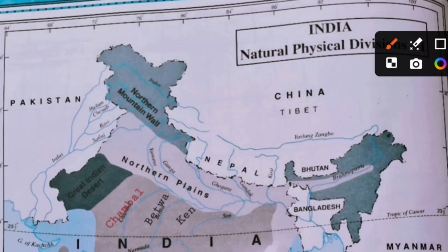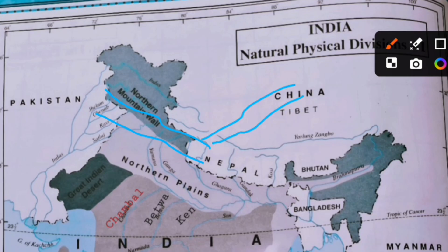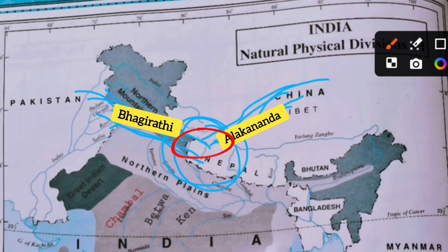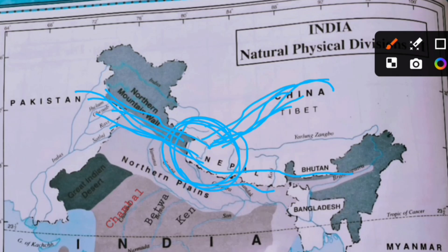The Ganga river is not originated directly as Ganga — it was formed by the confluence of two small rivers. Confluence means the meeting point of rivers. The two rivers are Bhagirathi and Alakananda, and they meet at a place called Devaprayaga. After they join, the river turns into the Ganga.